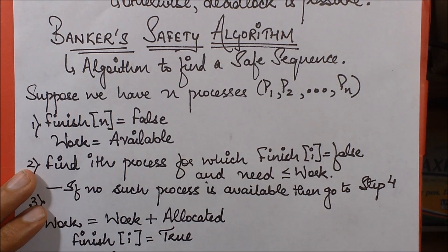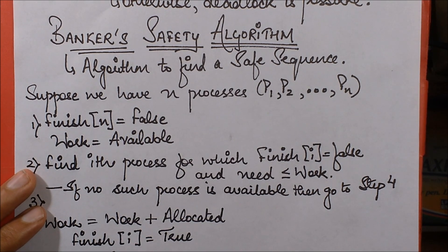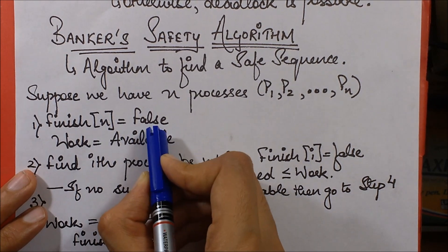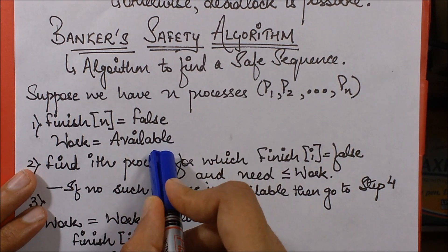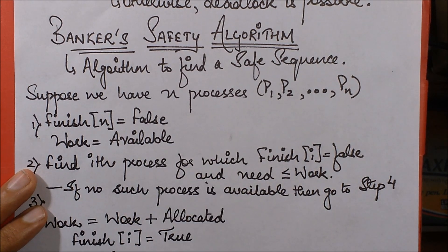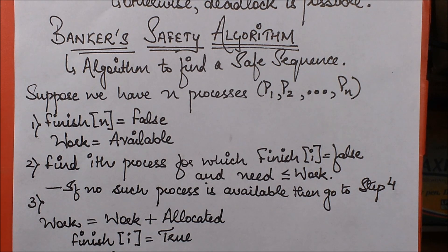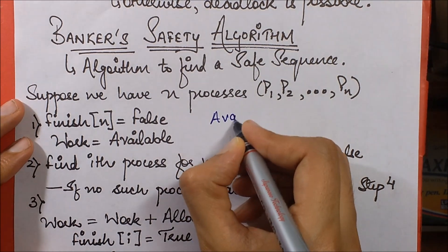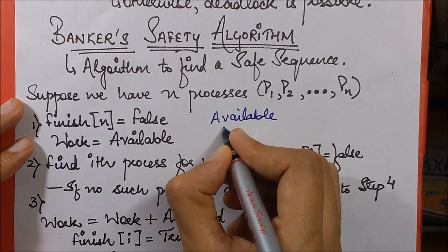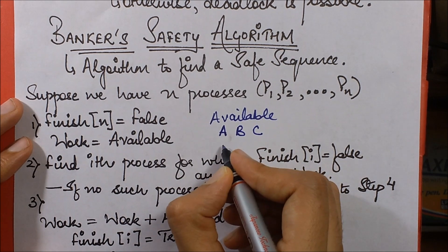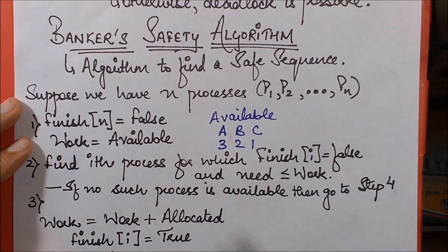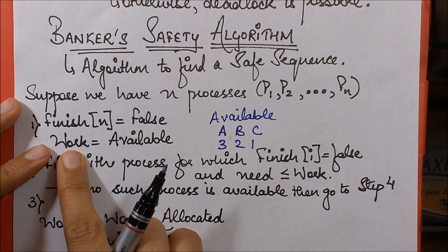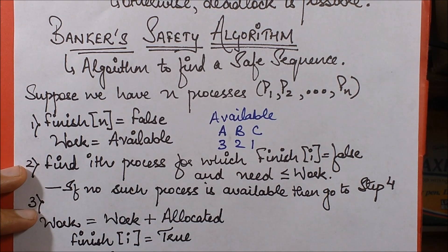In the first step, we set Finish[i] = false and Work = Available. Finish[i] is an array of flags, all initialized to false. Work is initialized to Available, where Available is the number of resource instances for each resource type. For example, if we have three resource types A, B, and C, and the availability is [3, 2, 1], we have three instances of A, two of B, and one of C. We assign that to Work.